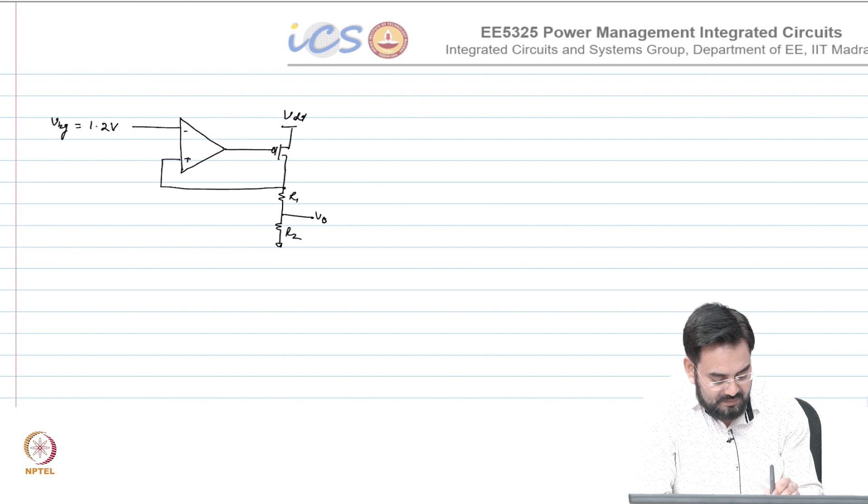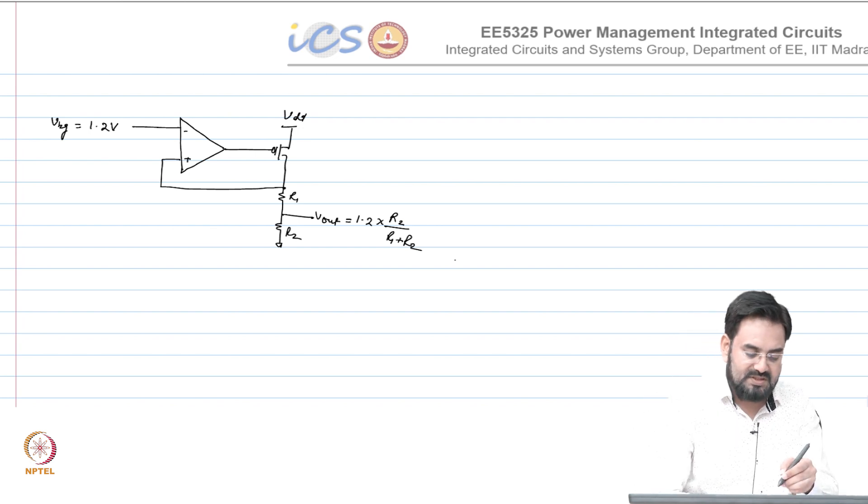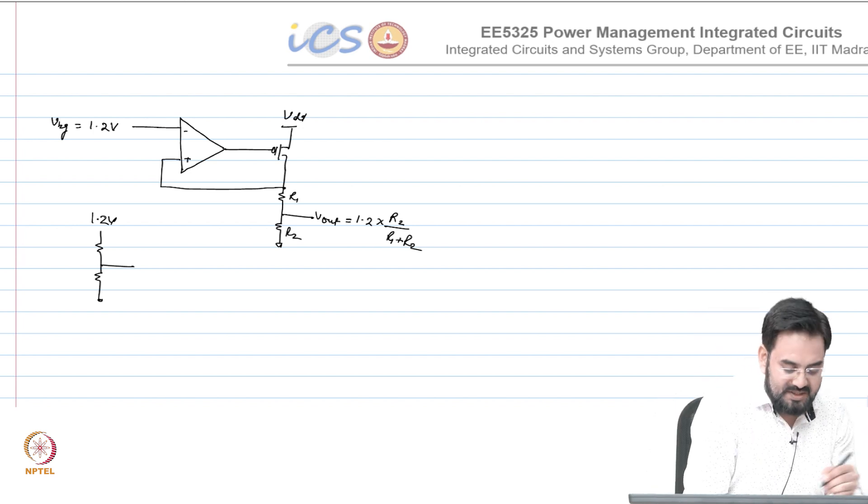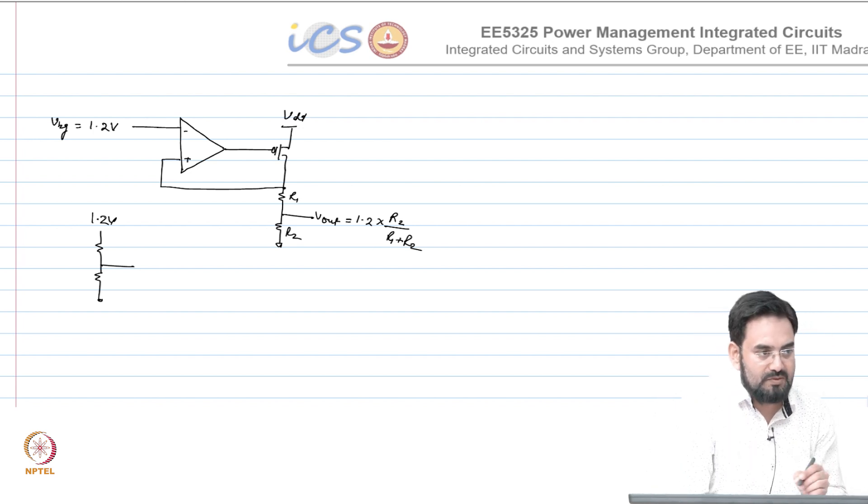What will be this voltage? 1.2 R2 by R1. You can use a resistor divider, you can directly connect 1.2 here, but the problem is this will load your previous stage, this may disturb the bandgap voltage and you do not want to load that.